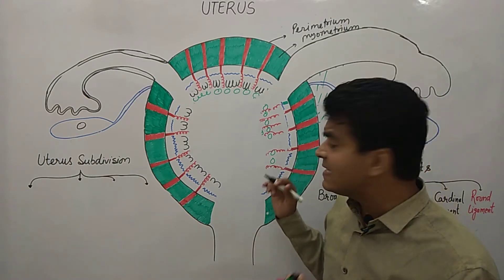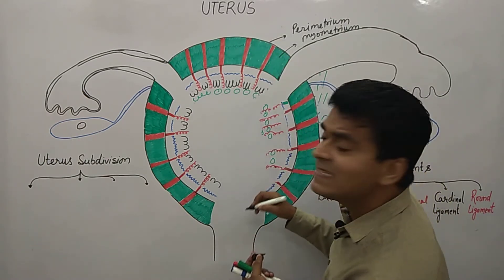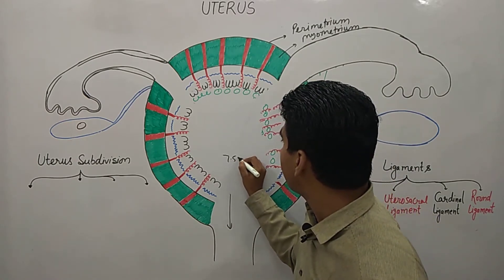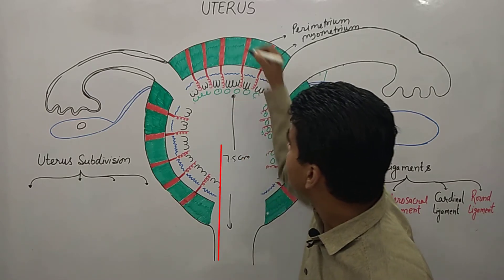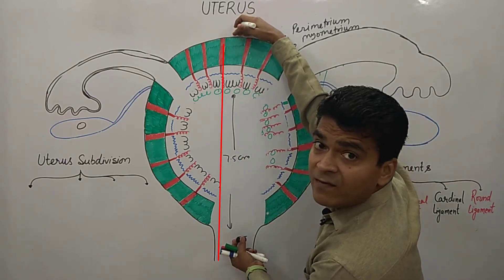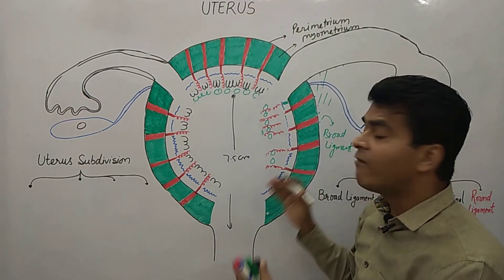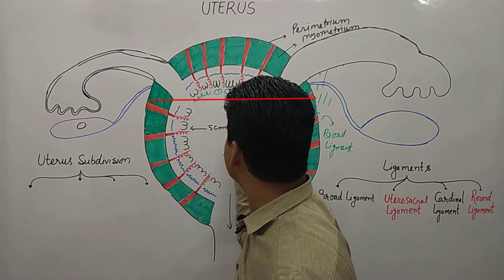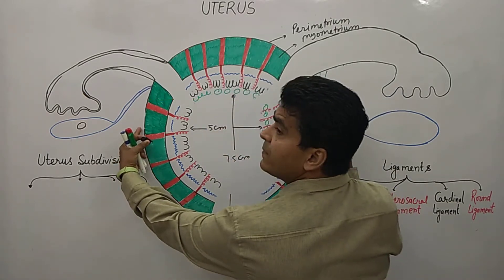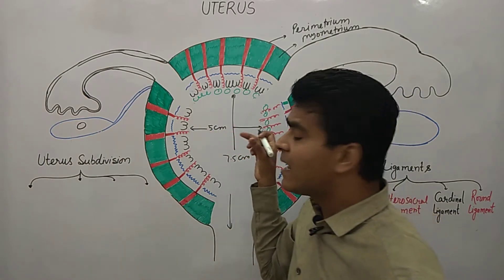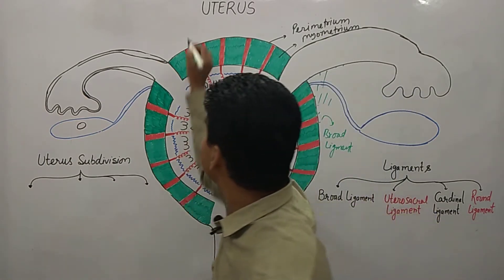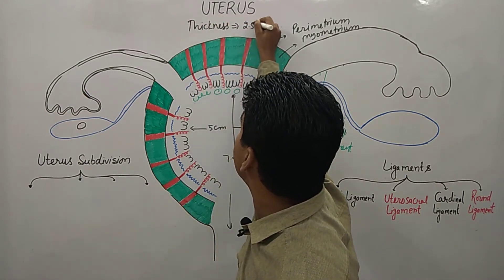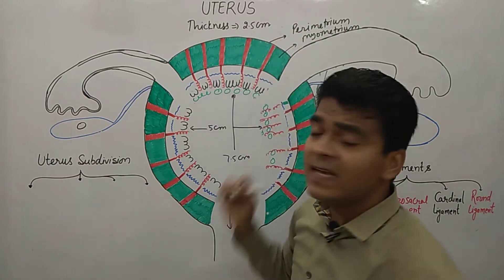Now discussing the size of the uterus: the length is 7.5 centimeters long, it is 5 centimeters wide, and the thickness is 2.5 centimeters.